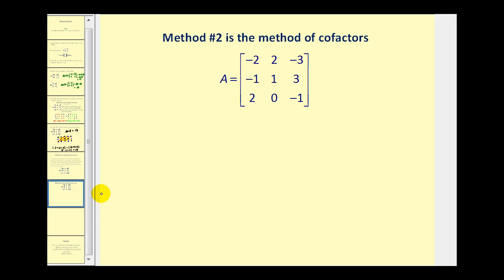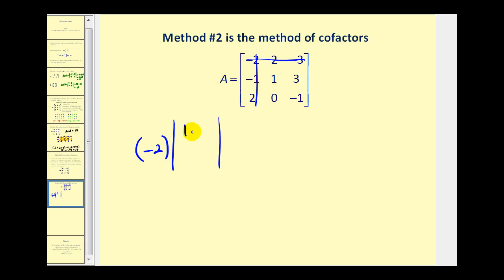We could select any row or column to work with. Let's stick to the first row. We take the first element, negative two, and multiply it by the determinant formed by deleting the row and column of that element. Eliminating row one and column one, we're left with these four elements forming a two by two determinant: one, three, zero, negative one. Since this element is in row one, column one, and one plus one equals two, which is even, we add this product.